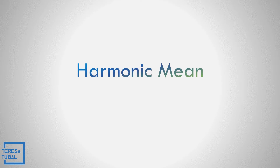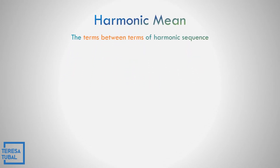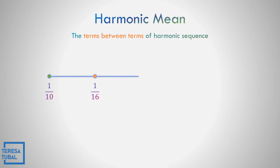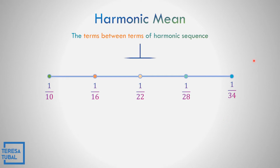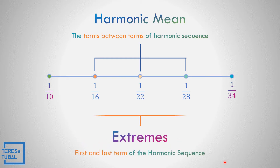What is harmonic mean? Harmonic mean is the terms between terms of a harmonic sequence. In the given harmonic sequence 1/10, 1/16, 1/22, 1/28, and 1/34, the harmonic means are 1/16, 1/22, and 1/28. The first and last term is the extreme, so the extremes are 1/10 and 1/34.